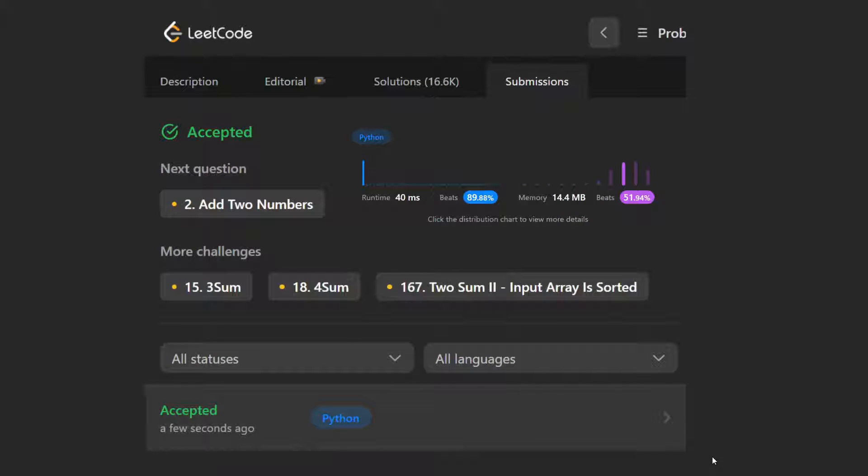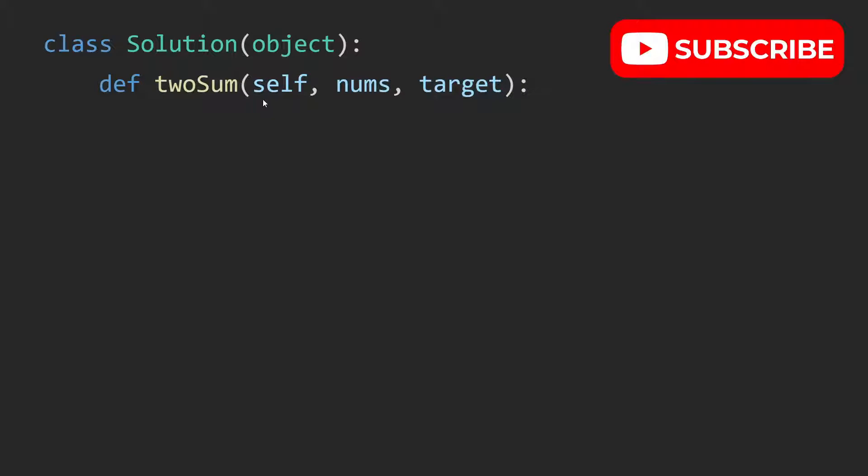Let's go over my Python code, which is accepted on LeetCode. So we have this function. The first step is to create a dictionary. Then we traverse through the array and we add the key, which is the number in the array, as well as the index or the location of that number in the array.